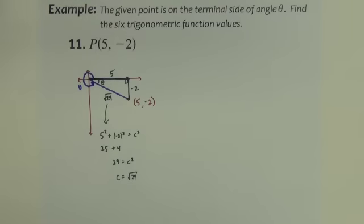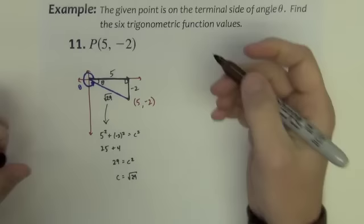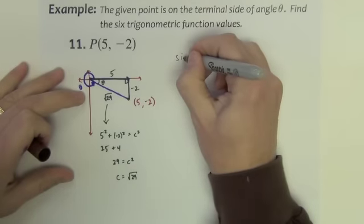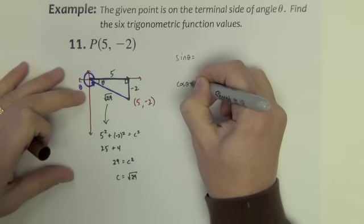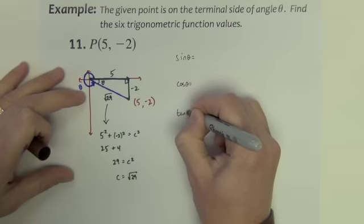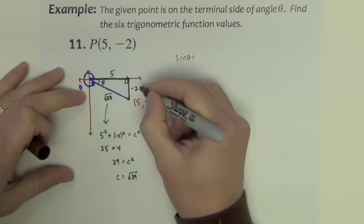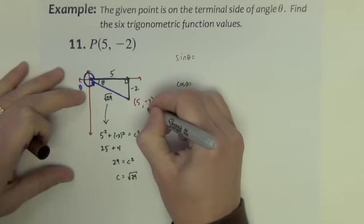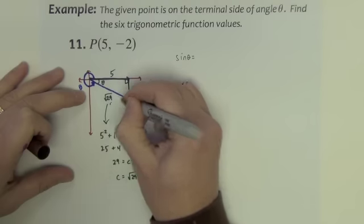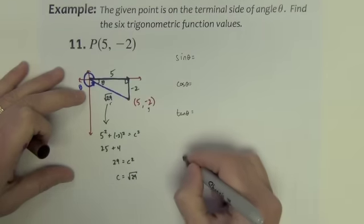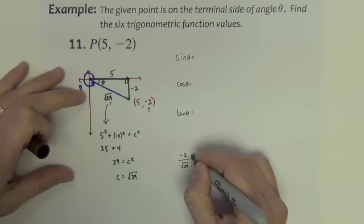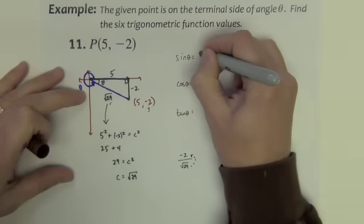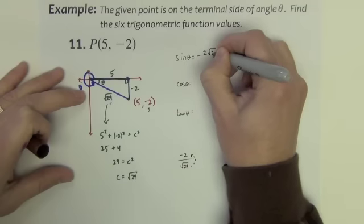With that, we are ready to begin. We want the sine of theta. The sine is the y value over the r value. So it is, I'll do the scratch work here, it's negative 2 over the square root of 29. Bring up the square root, we end up with negative 2 square root of 29 over 29.